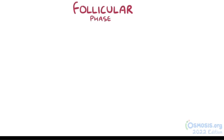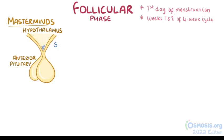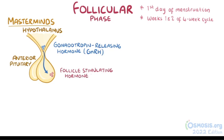Let's first focus on the pre-ovulatory period, starting with the ovarian follicular phase. This phase starts on the first day of menstruation and represents weeks one and two of a four-week cycle. The whole menstrual cycle is controlled by the hypothalamus and the pituitary gland. The hypothalamus secretes gonadotropin-releasing hormone, or GnRH, which causes the anterior pituitary gland to release follicle-stimulating hormone, or FSH, and luteinizing hormone, or LH.